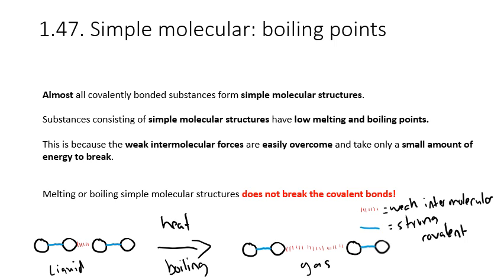Simple molecular structures have low melting and boiling points because the weak intermolecular forces — the forces between molecules — are easily overcome and only take a little bit of energy to break. It is very important that we understand we are not breaking covalent bonds when we melt or boil simple molecular structures. In the diagram, two oxygen molecules have weak intermolecular forces between them and strong covalent bonds between the atoms. When we heat them, we pull the molecules apart, overcoming that weak intermolecular force. The molecules themselves are unchanged — only further apart — and we now have a gas.